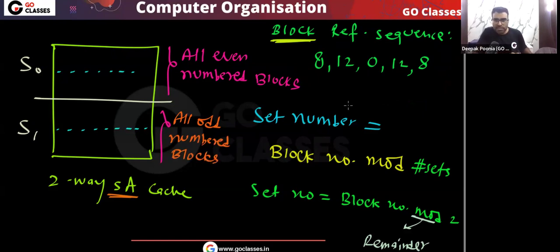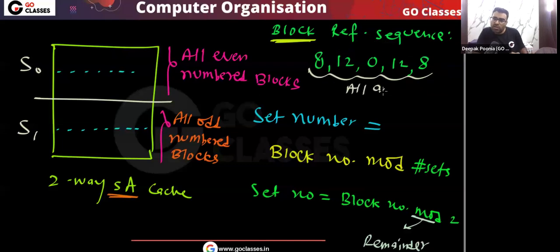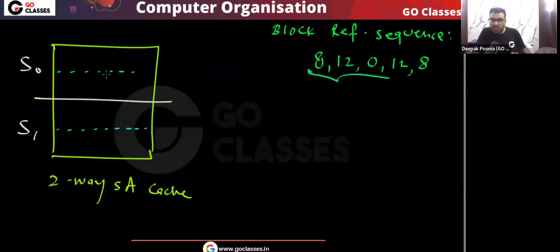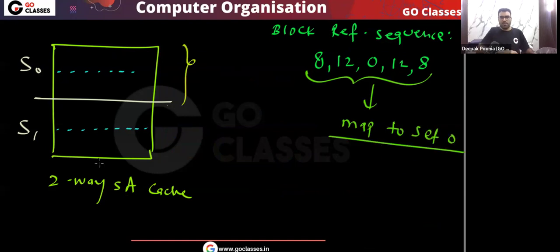An interesting thing in this question is that the block reference string — 8, 12, 0, 12, 8 — contains all even-numbered blocks. Because all are even-numbered blocks, all of them will map to set number zero. So all of these blocks will map to the two lines in set zero.